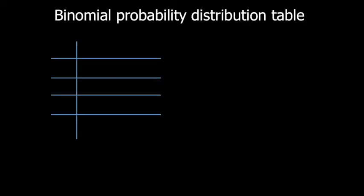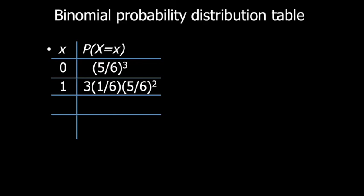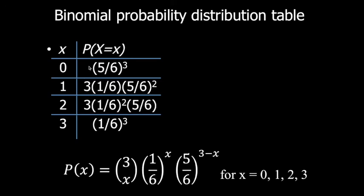The coefficients 1, 3, 3, 1 are combinations of 3 taken x. The term (1/6) is the probability of success raised to the power of x, and (5/6) is raised to the power of (3 − x). This gives us the binomial probability function: P(X=x) = C(3,x) × (1/6)^x × (5/6)^(3−x), for x = 0, 1, 2, 3.